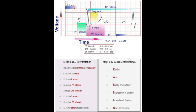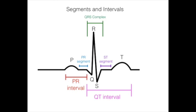Step two: determine the rate. If the rhythm is regular, count 1500 divided by the number of small squares, or use the 300, 150, 100, 75, 60, 50 method for each large box in the R-to-R interval. If the rhythm is irregular, count the number of R-waves in a six-second strip and multiply by 10.